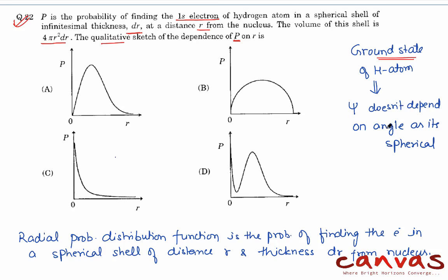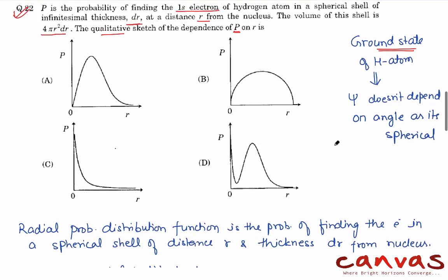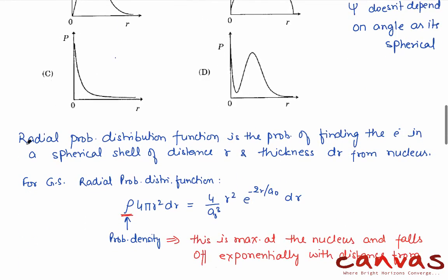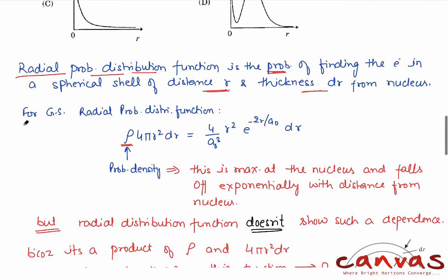We are talking about s orbital, it is spherical, so the angle dependence is out of question. Second thing, the radial probability distribution function is the probability of finding the electron in a spherical shell at distance r and thickness dr from the nucleus. For this ground state, the radial probability distribution function takes this form.